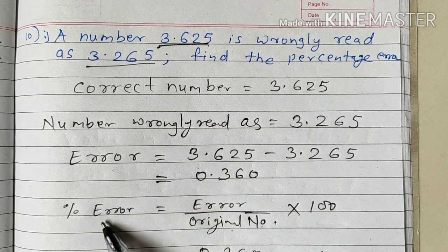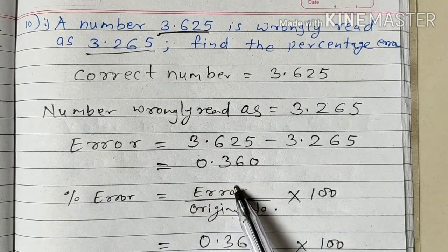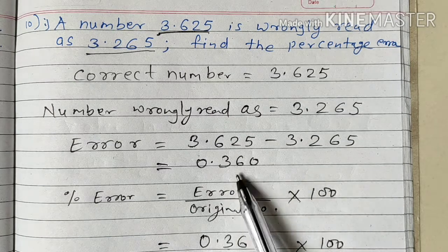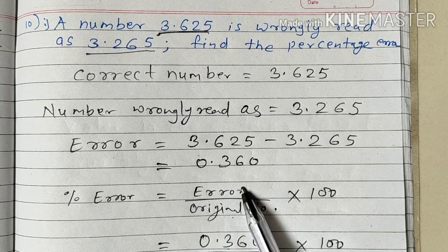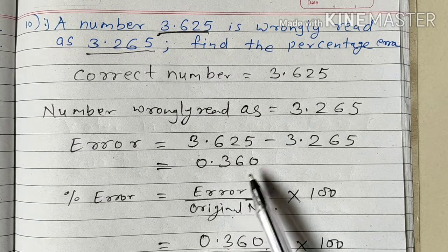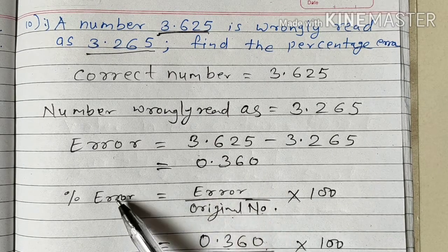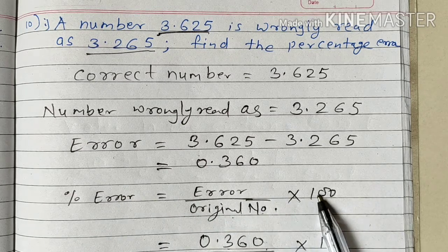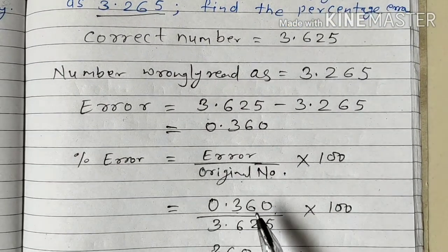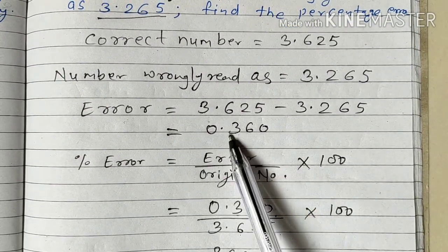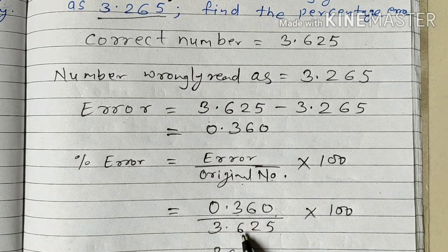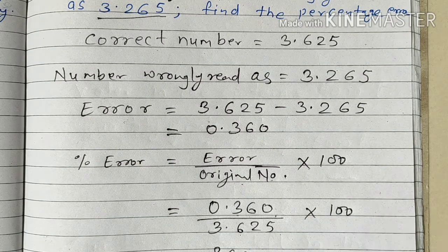The percentage error formula is: error upon original number, multiplied by 100. This is the same formula we have learned in percentage increase or percentage decrease. Instead of the increase or decrease, we have taken the error. So, error upon original number multiplied by 100. The error in our question is 0.360, and the original number is 3.625, multiplied by 100.